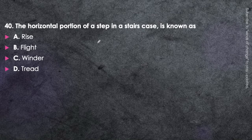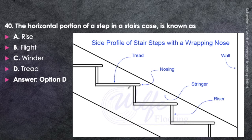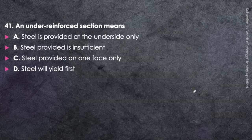Next question: The horizontal portion of a step in a staircase is known as the tread — option D, a very easy question. The horizontal portion is called the tread; the portion of tread extending beyond the riser is called the nosing. The vertical portion is called the riser, and the stringer beam runs parallel to the staircase. Memorize these terms — they are very important.